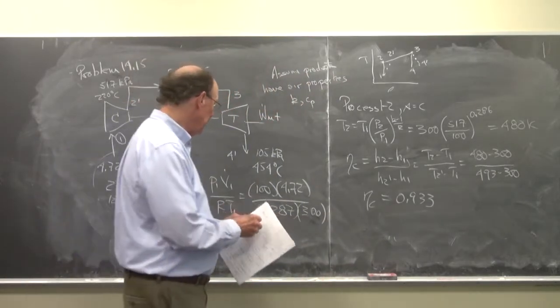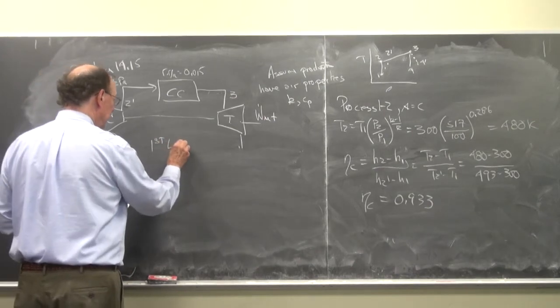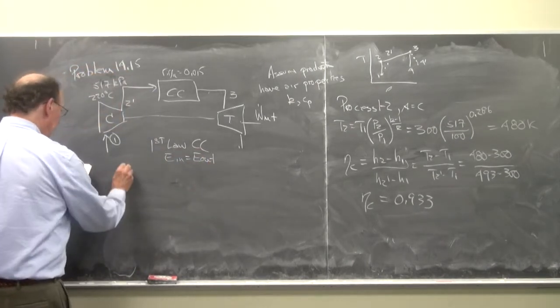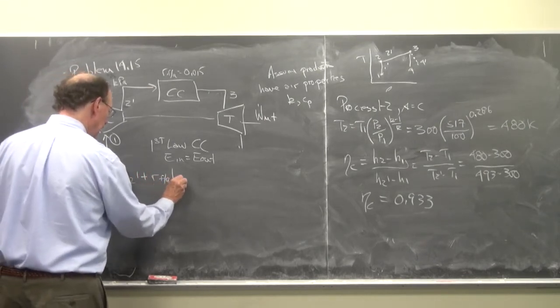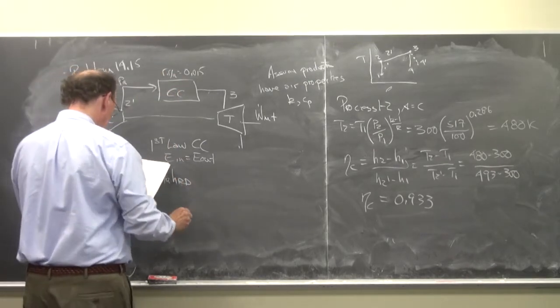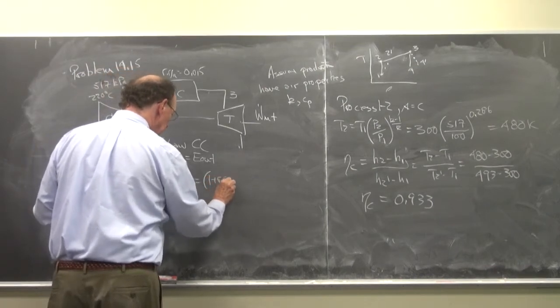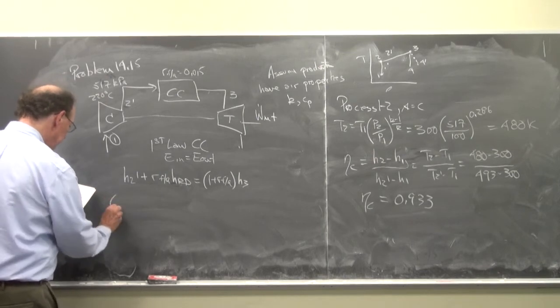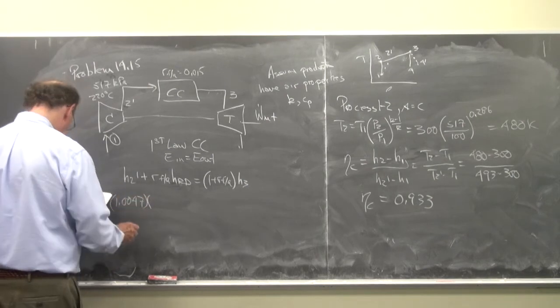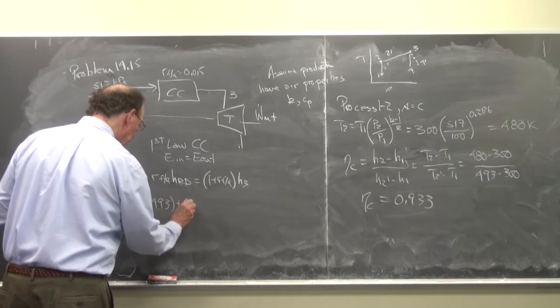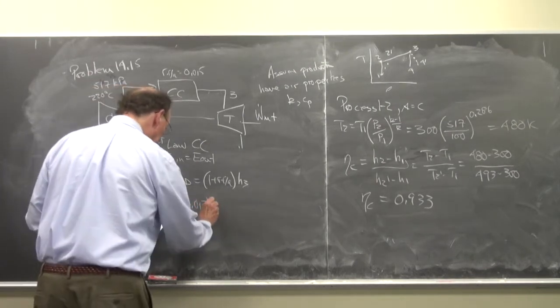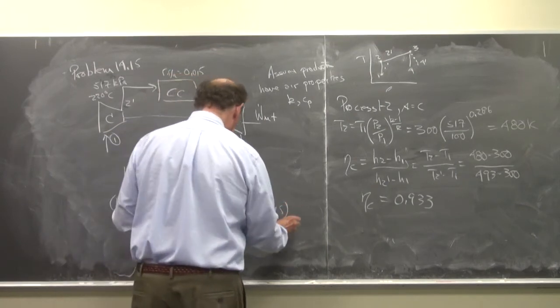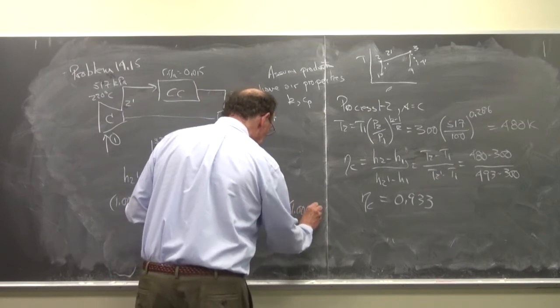And now we're going to do the first law on the combustion chamber. So En equals E out. So we have H2 prime plus RFA times H of RP is equal to 1 plus RFA times H3. We're going to substitute in for Ccp. So we have Ccp 1.0047 times T2 prime 493 plus 0.015 times 44.102 is equal to 1.015 times Ccp 1.0047 times T3.